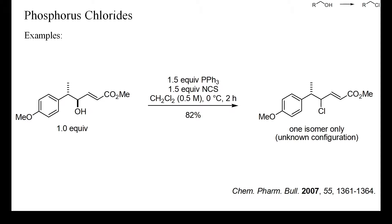In this example, the more reactive N-chlorosuccinimide was used as chlorinating reagent. Even at zero degrees Celsius, a high yield of allylic chloride was obtained in only two hours.